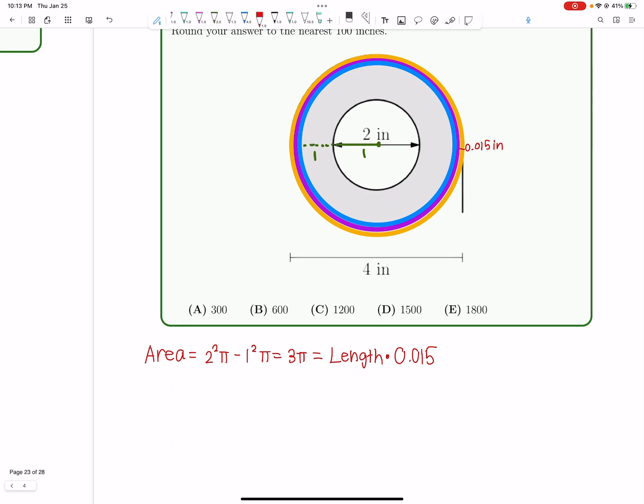So now all we have to do is do 3 pi divided by 0.015 to find the length. And 0.015 is approximately 1 over 60-ish. And they asked approximately, so we can make these kind of loose approximations here.